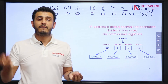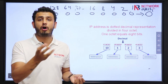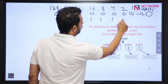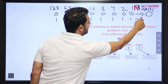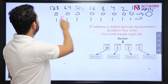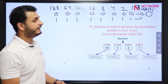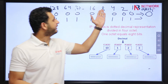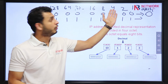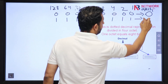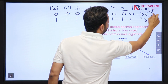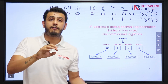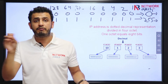How will we calculate the maximum value? When I turn all the bits on: 128 plus 64 is 192, plus 32 is 224, plus 16 is 240, plus 8 is 248, plus 4 is 252, plus 2 is 254, plus 1 is 255. So the maximum value is 255 and the minimum value is 0. It means in an octet, minimum value will be 0 and maximum value will be 255.